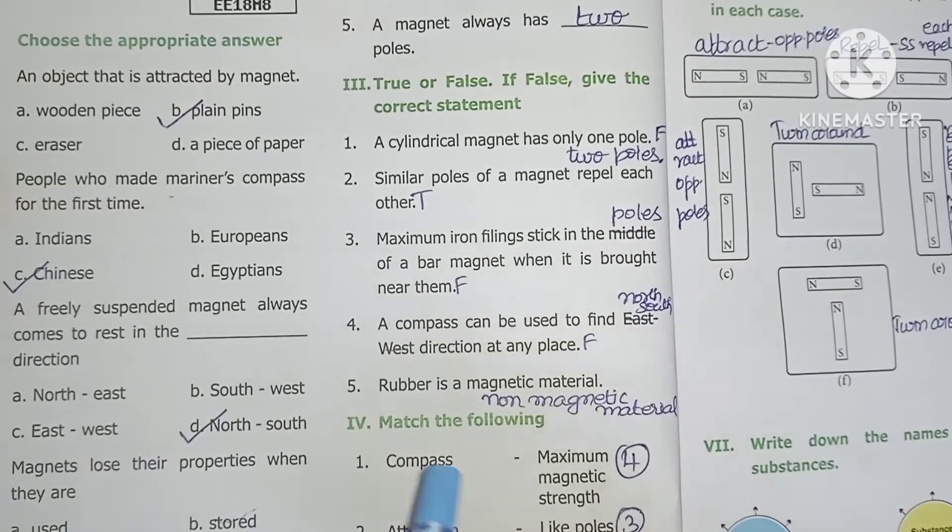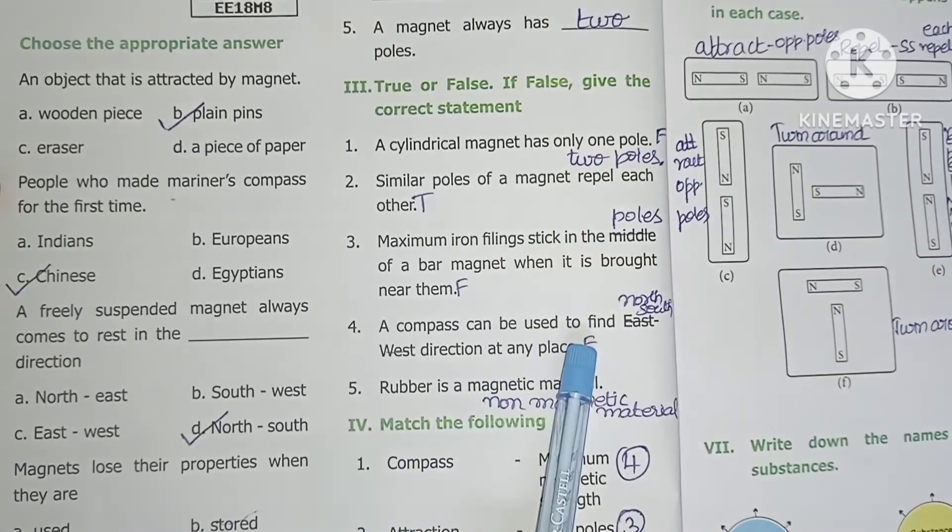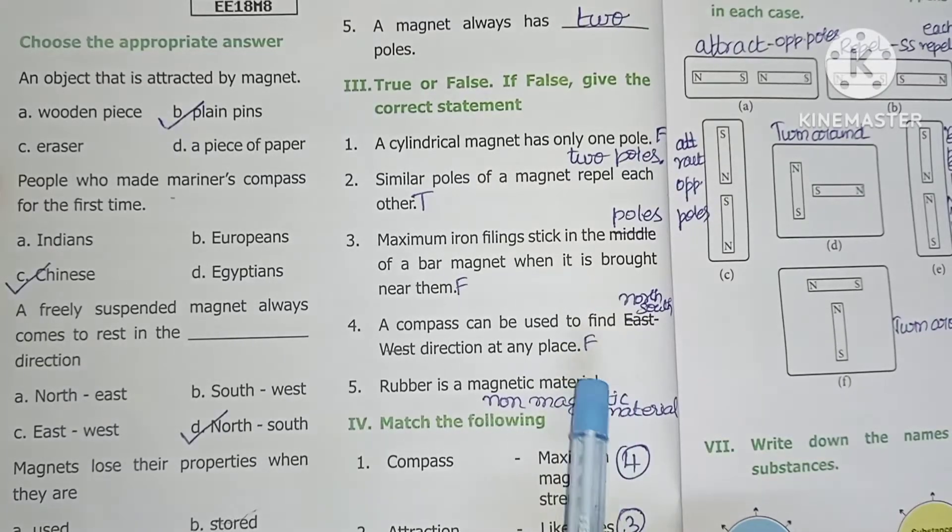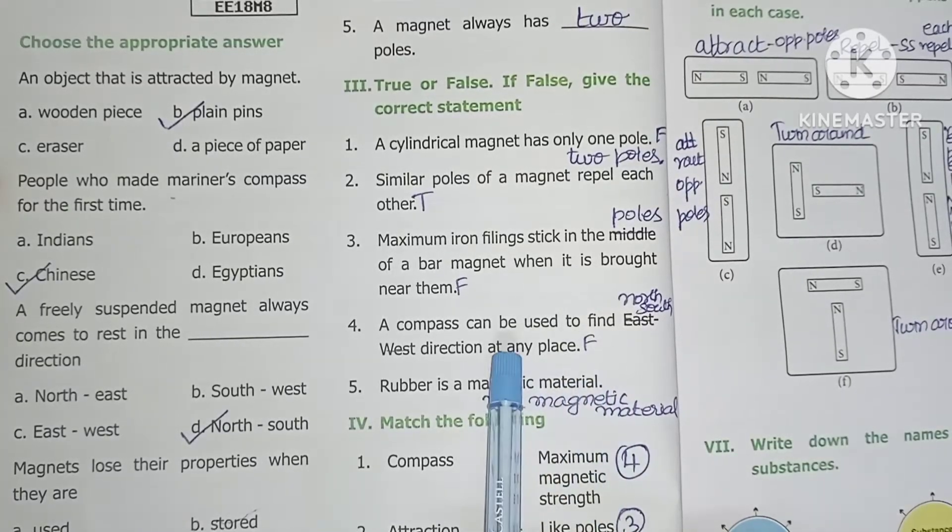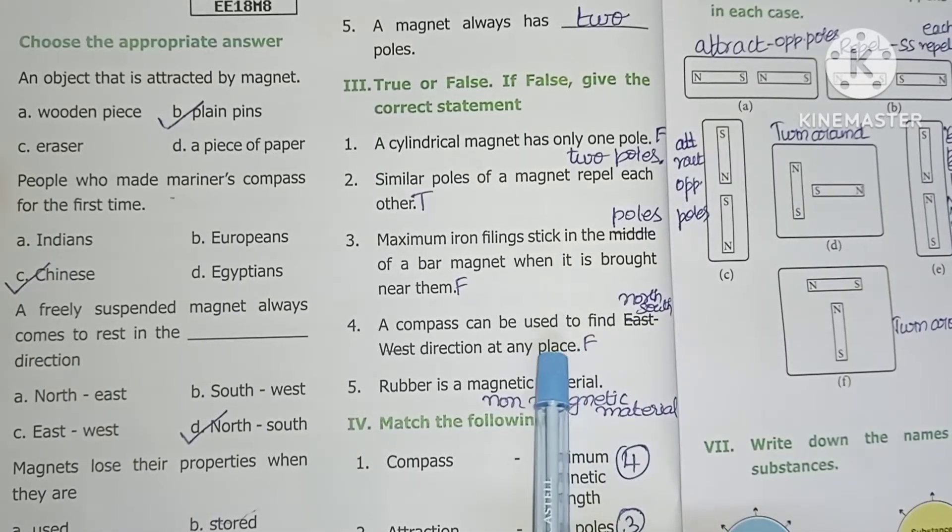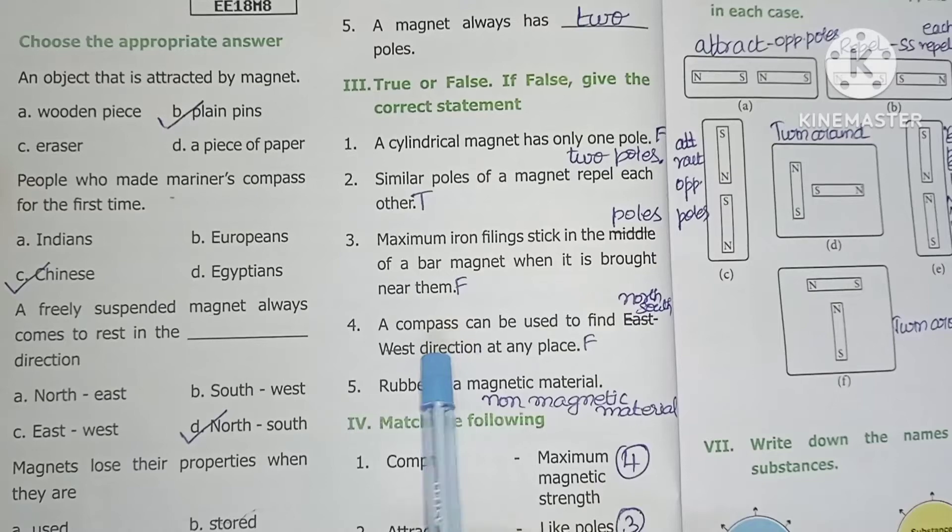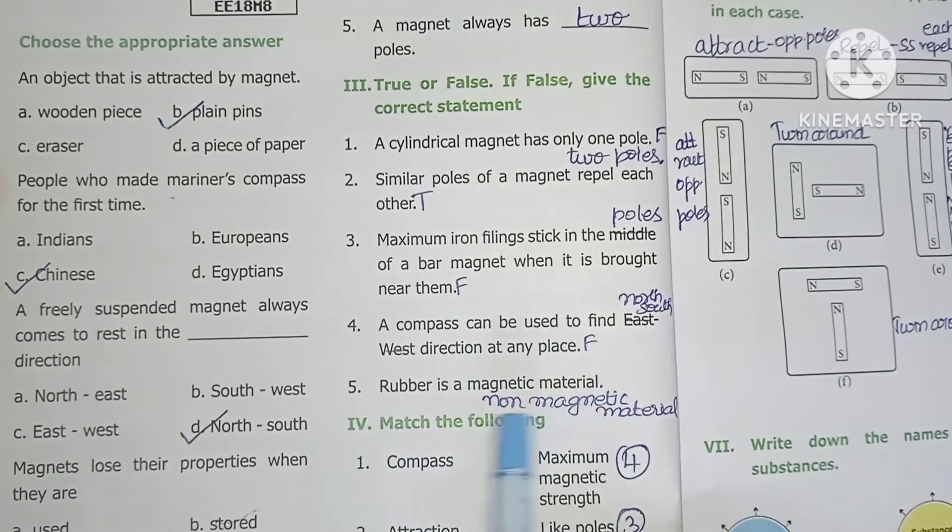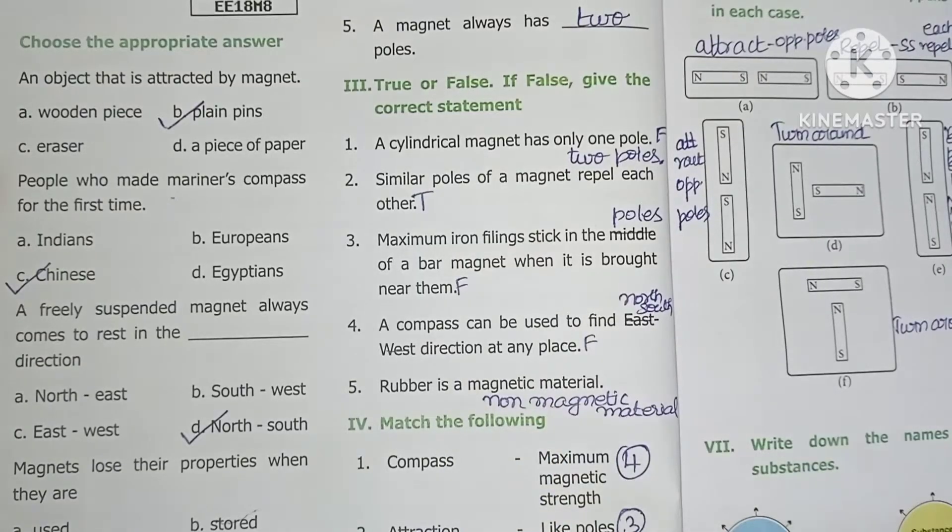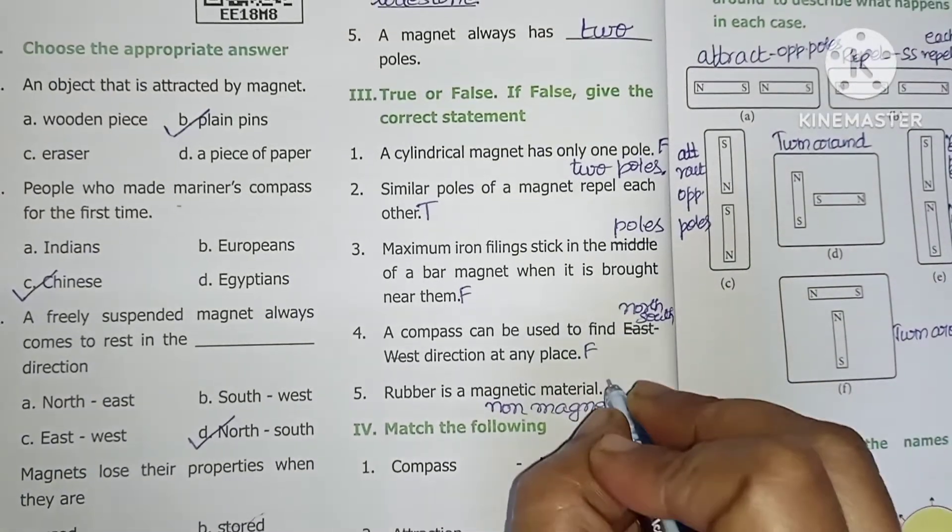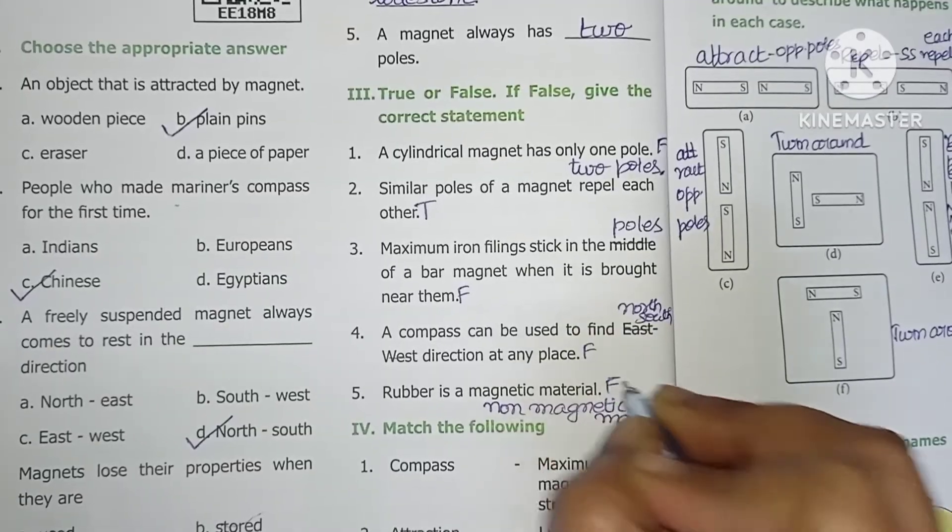Fourth, a compass can be used to find east-west direction at any place - the statement is false. In the compass, we have north-south direction. Fifth, rubber is a magnetic material - false. It is non-magnetic material.